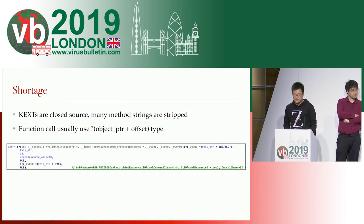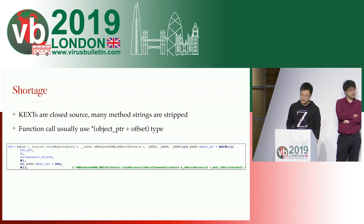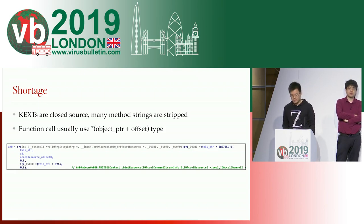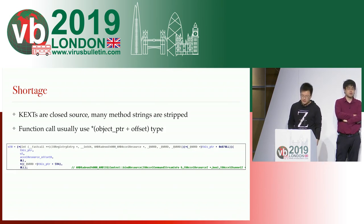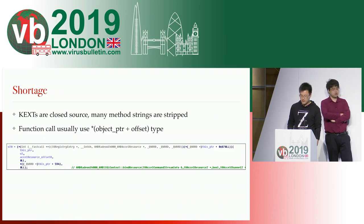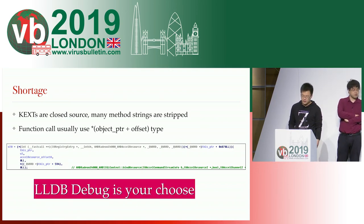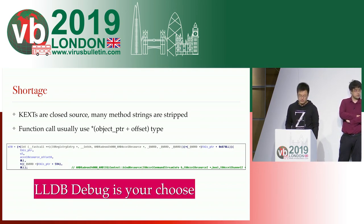The limitations are mainly because most extensions are closed source and the method strings are stripped. Moreover, C++ language usually uses object pointer plus offset to call functions. So these objects may lead to misses. Here we recommend using LLDB debug to help us with this.